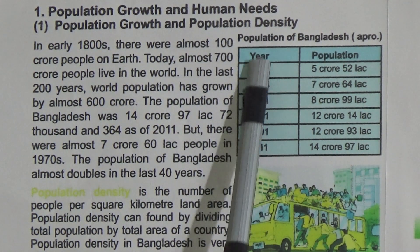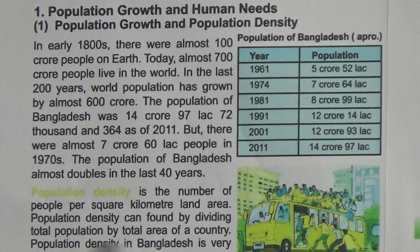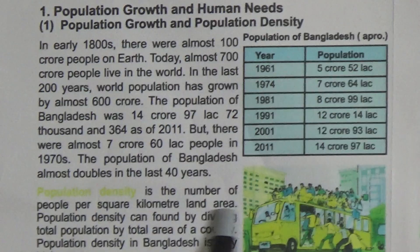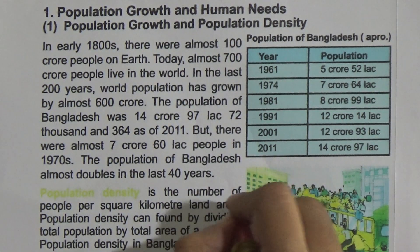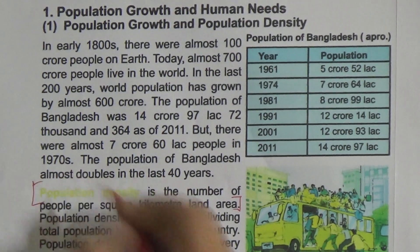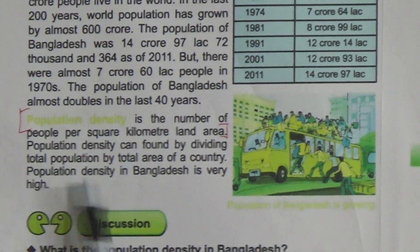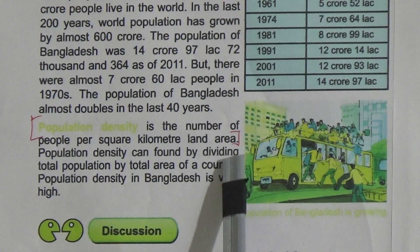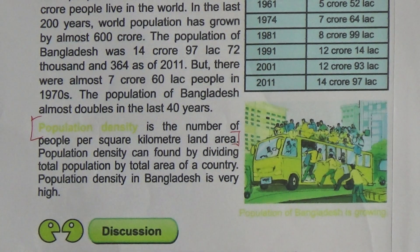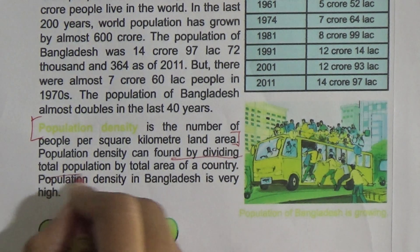Population density is the number of people per square kilometer of land area. This is the definition of population density — you have to memorize it. Population density can be found by dividing the total population by the total area of a country. Population density in Bangladesh is very high.